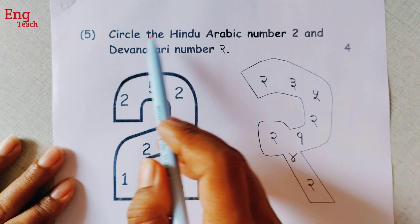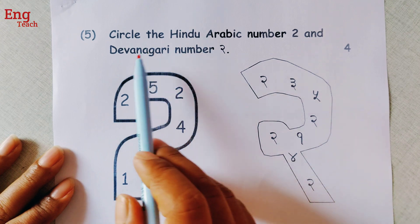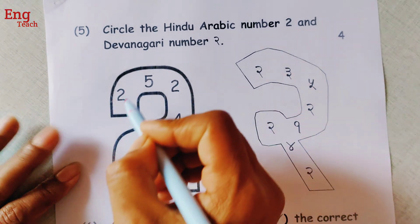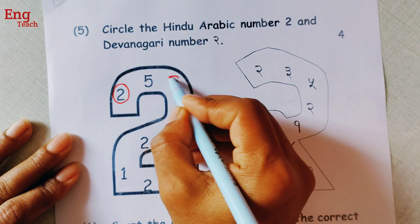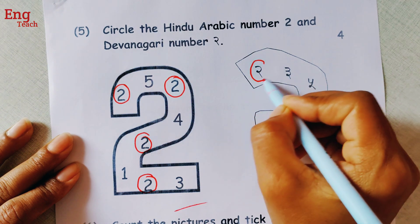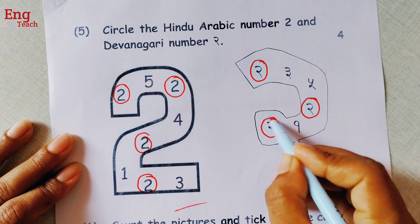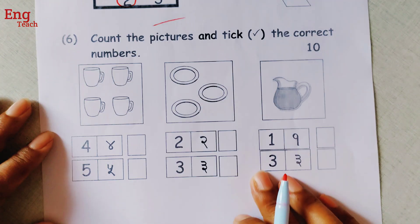Now number 5, circle the Hindu Arabic number 2 and Devanagari number 2. Now let's circle it here. Number 2, sorry, we have to circle number 2. And here also this one, 2. This one, Devanagari. It is Devanagari. Well, now next one.